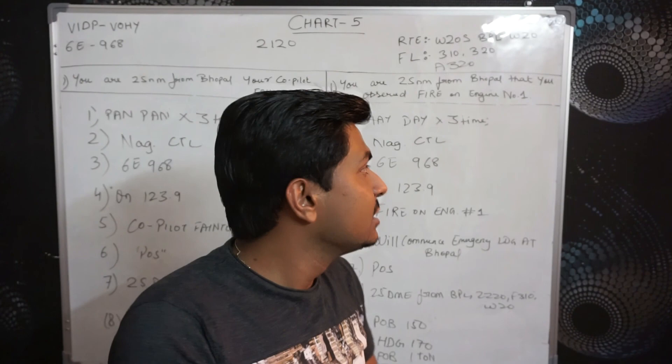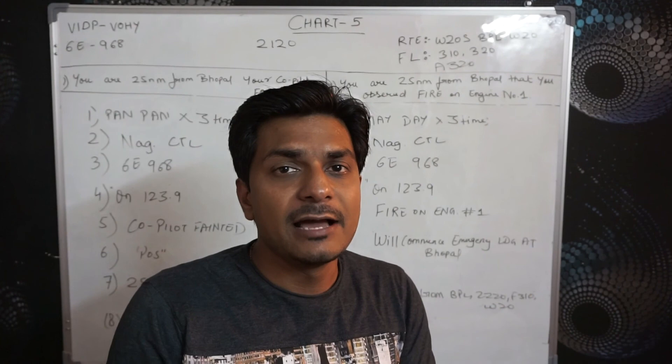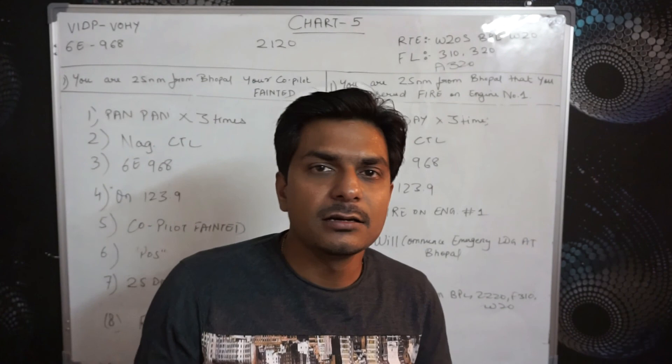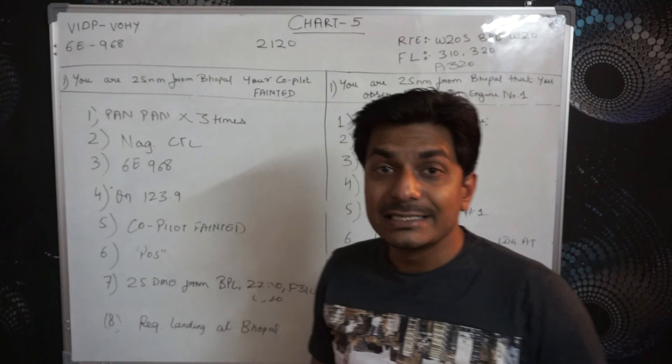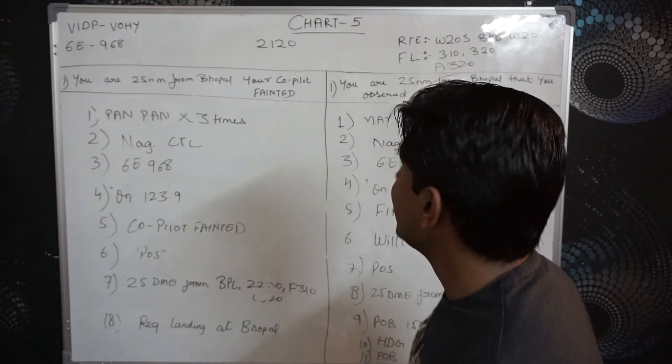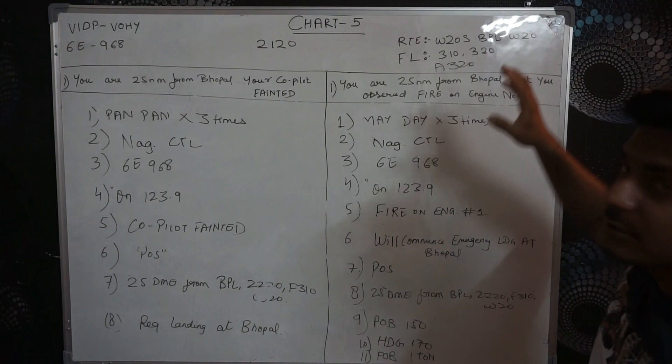The example is the same as in the last video — same destination and departure: Delhi to Hyderabad. Call sign is I FLY 968. Time is 2220 UTC. Route is Whiskey 20. South — Bravo Papa Lima — and Whiskey 20. Flight level is 310 and 320. Two flight levels are given because the heading may change along the route.